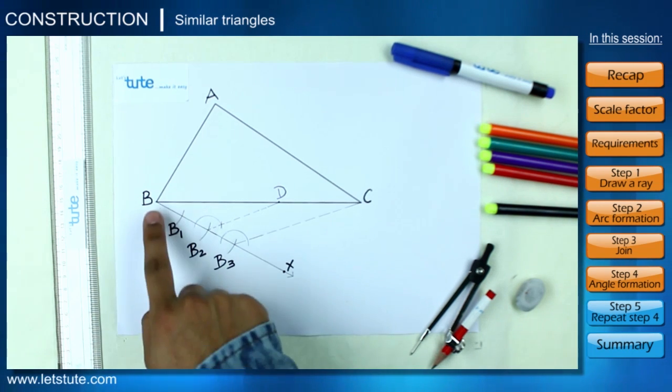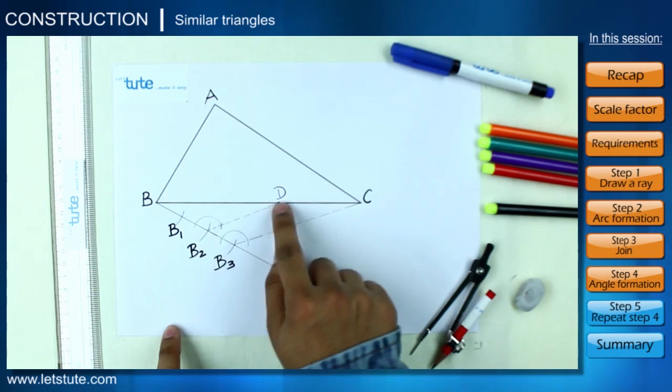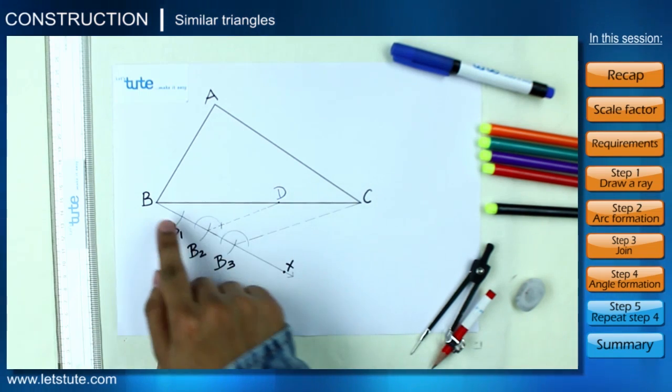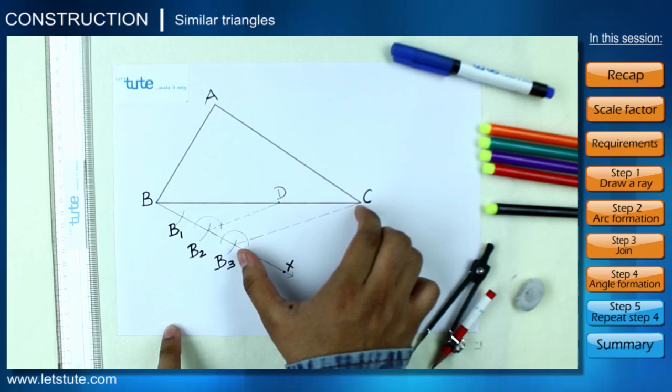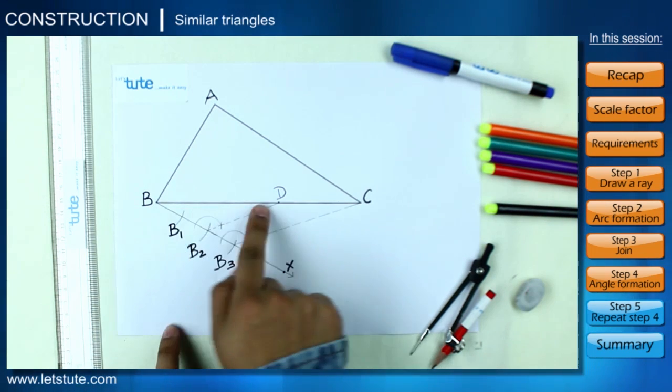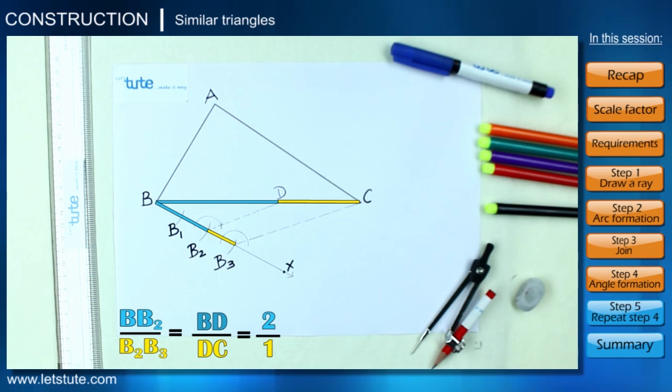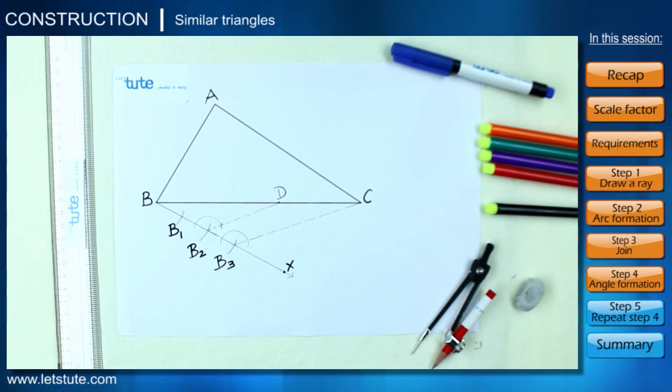If we consider BB3C as one triangle, then the line segment B2D cuts this triangle in such a way that it's parallel to the side B3C. If you take the ratios of these divided sides of the triangle, we will get a ratio of 2 is to 1, which means we have successfully secluded two equal parts on one side out of the three equal parts.